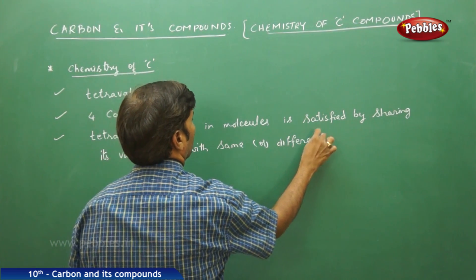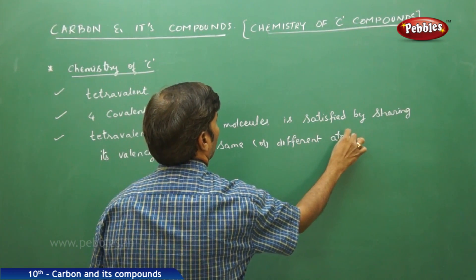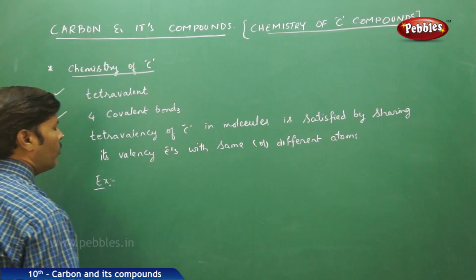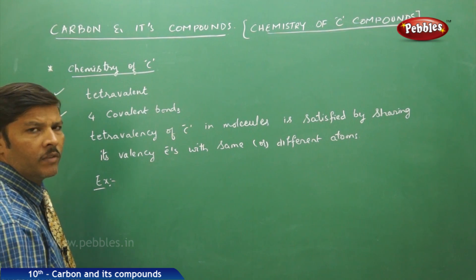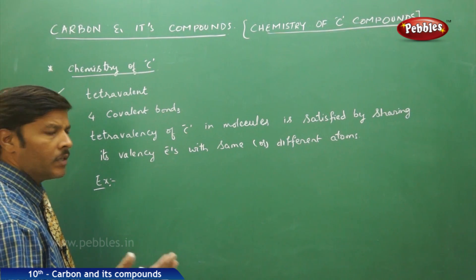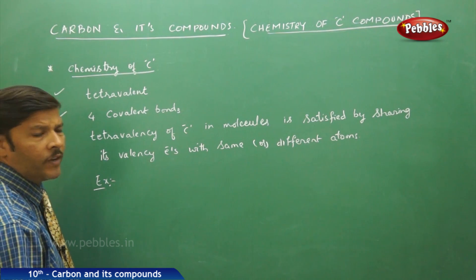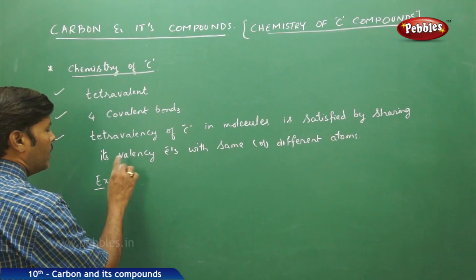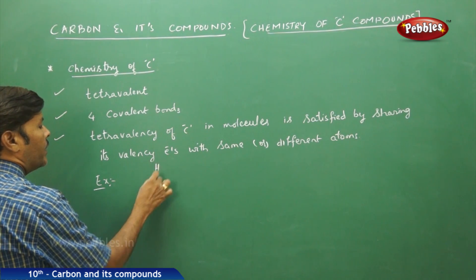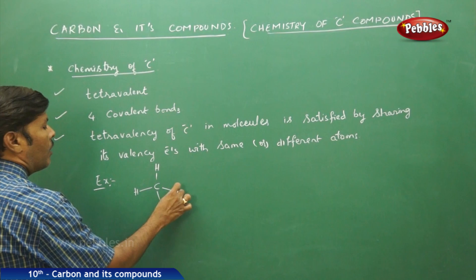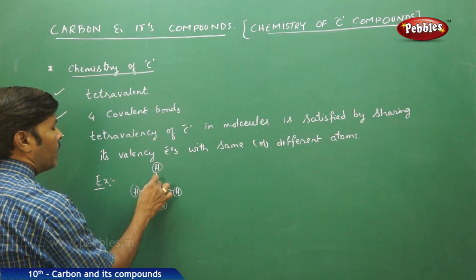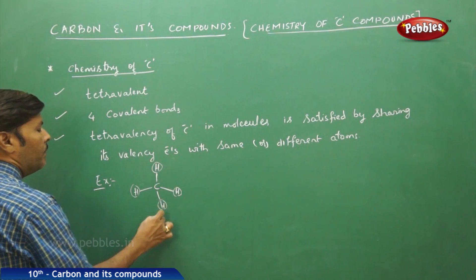For example, if carbon is sharing with the same atoms — if carbon's valence electrons are sharing with another carbon atom — tetravalency is still satisfied, and interlinking takes place. If I take carbon forming four covalent bonds with different atoms, like four hydrogens, tetravalency is satisfied. Similarly, this is CH4.